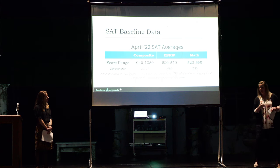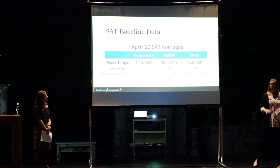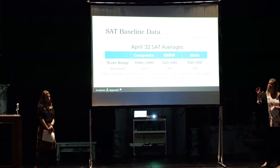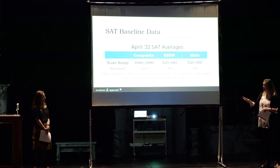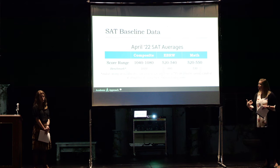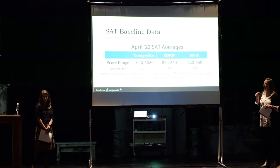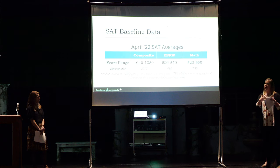I don't think anyone will be mad if students grow on the SAT. We're looking at SAT averages from April — your current seniors took the SAT in April of last school year. We have the score ranges for your three schools up here on the board. For composite, your score ranges were between 1040 and 1080. For EBRW — evidence-based reading and writing — between 520 and 540. You'll see these ranges are not very big. And then math is between 520 and 550.